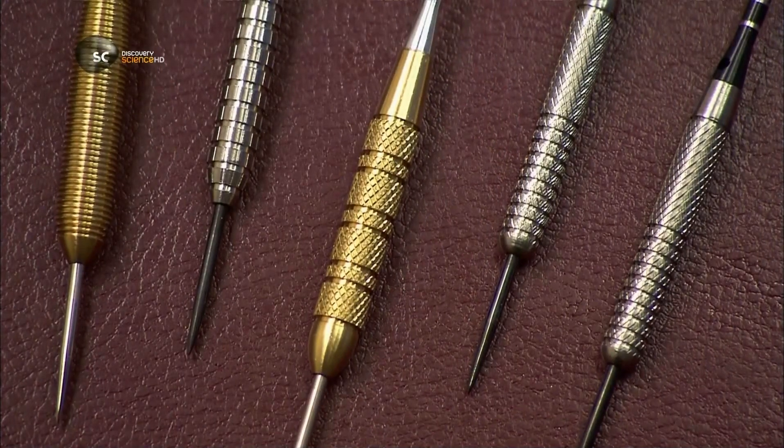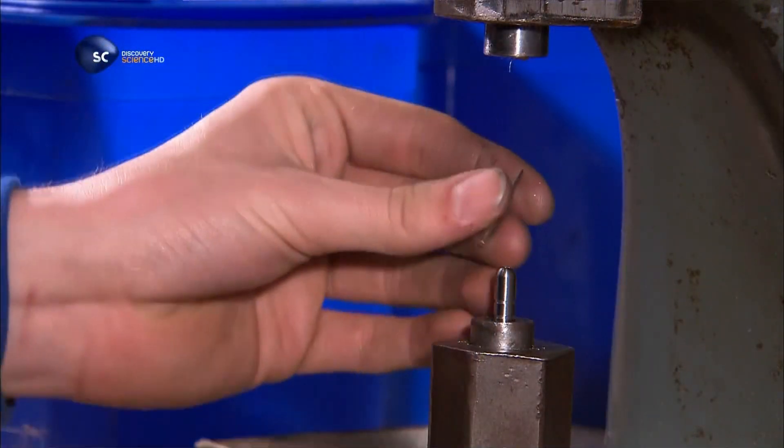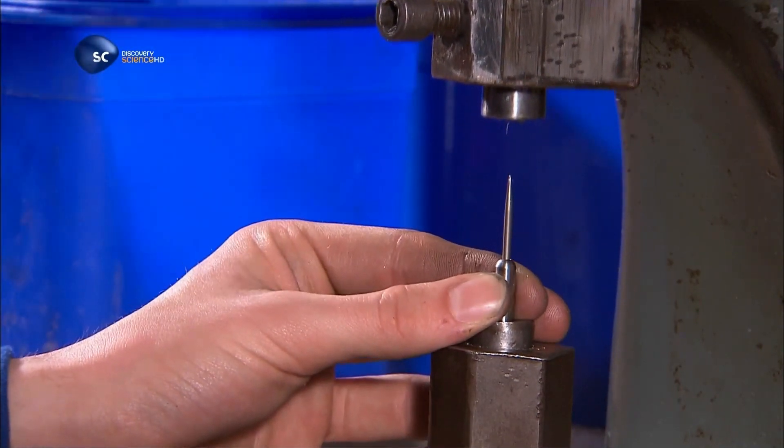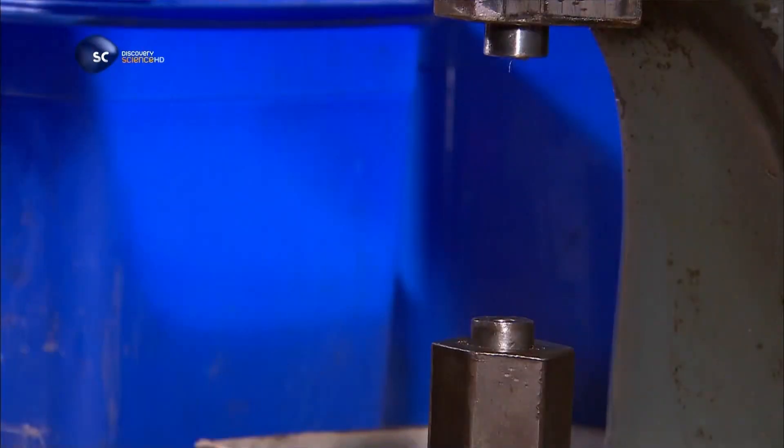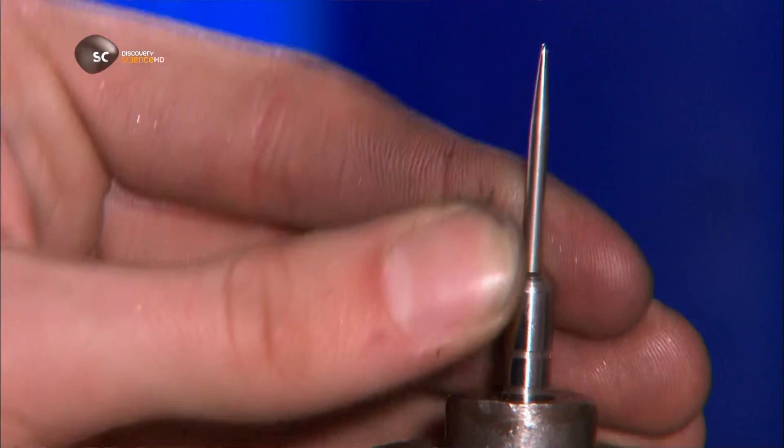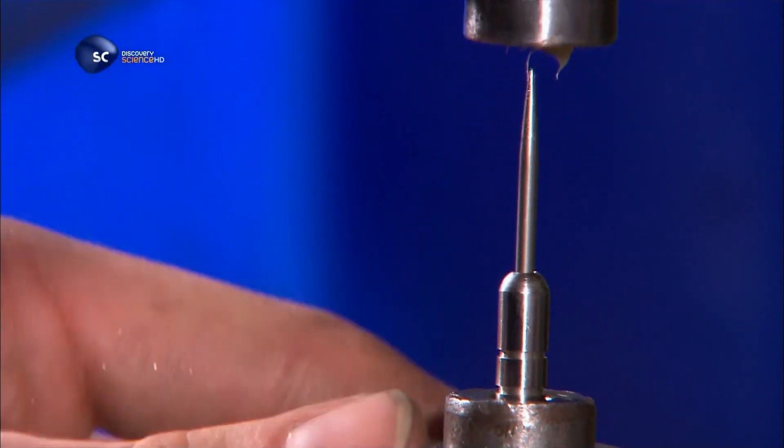And now, production takes a very sharp turn. They force a pointed steel tip into the hollowed end of the dart barrel, using a hydraulic press. With the point now snugly in the barrel, this dart is ready for its wings.